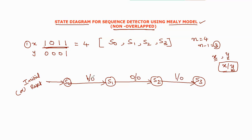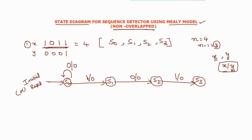So x equal to 1, y equal to 0. Here x equal to 1 goes to S1. Automatically, x equal to 0 and self-state returns to initial state with y always 0. This is complete for S0.